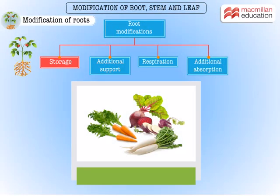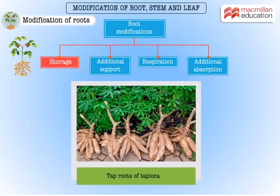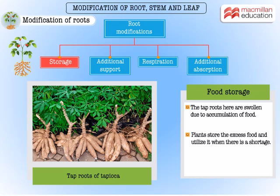These familiar vegetables grow under soil. But did you know that they are modified tap roots? The tap roots here are swollen due to accumulation of food. Plants store the excess food and utilize it when there is a shortage. These swollen roots are called tuberous roots.